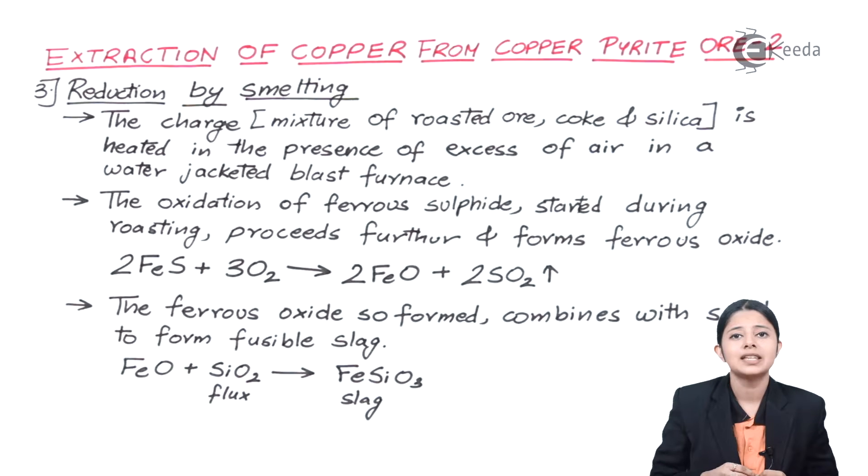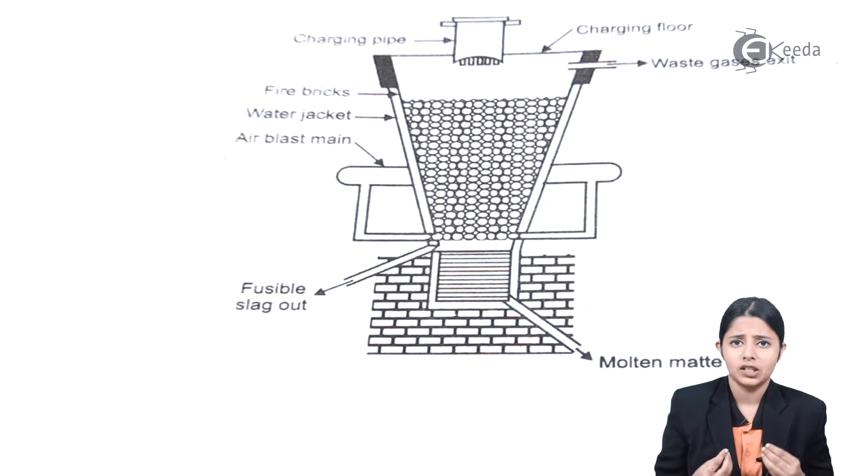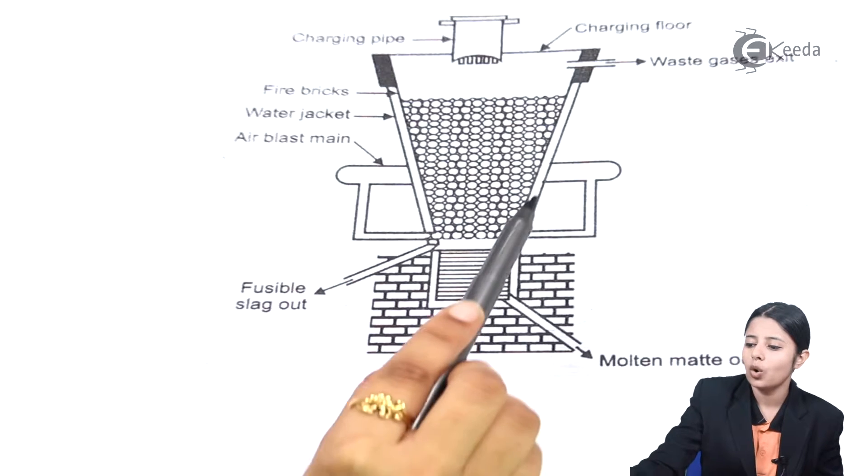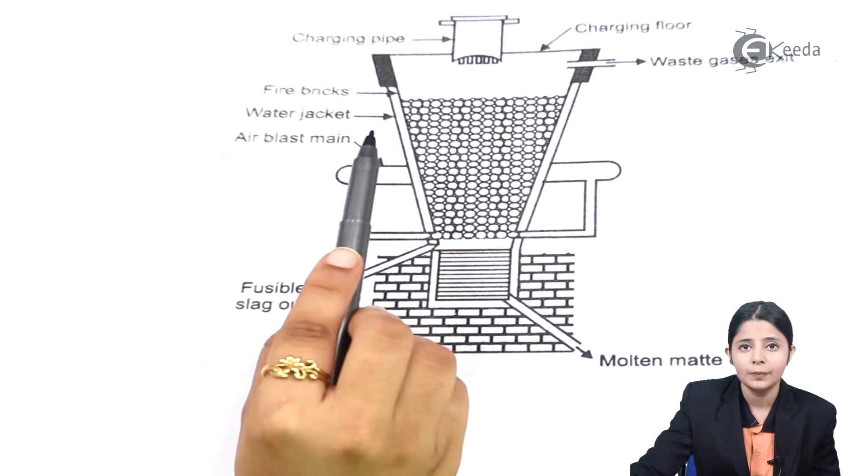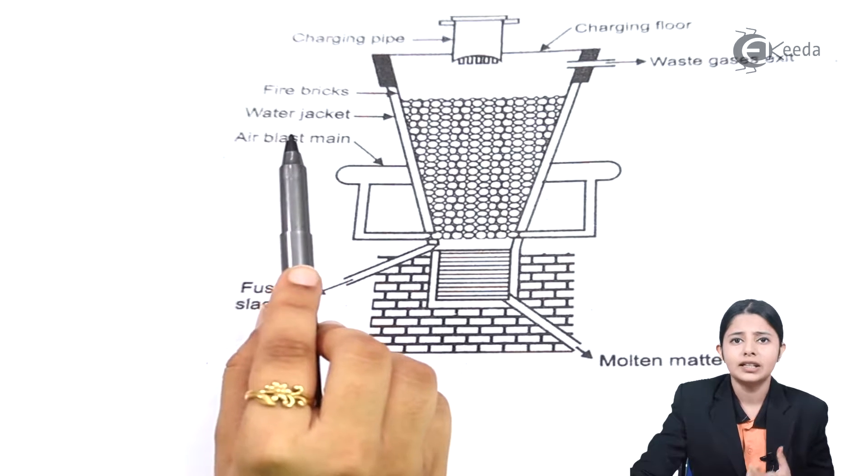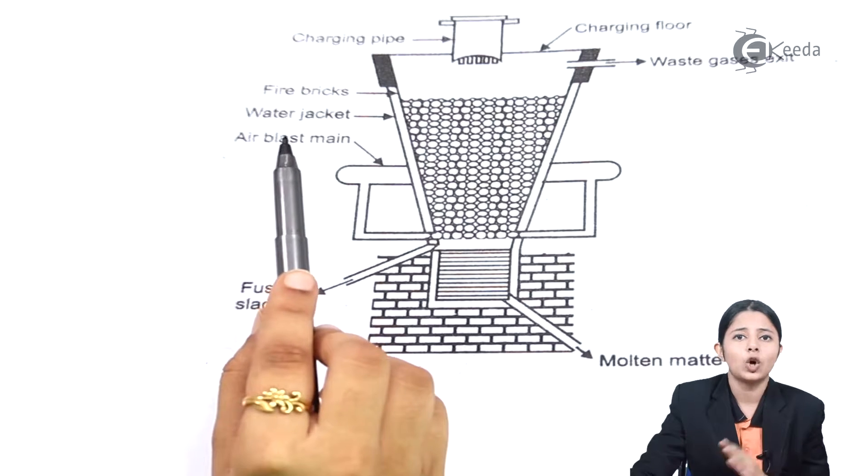Now let us see the diagrammatic representation of the entire process. How the entire process happens in the presence of a water jacket blast furnace. So now what do I mean by water jacket blast furnace? The entire blast furnace is covered by a covering. This covering contains water in it, but not plain water. It contains heated water in it. The water in it is heated. And that is the reason why the temperature of the entire blast furnace is maintained.